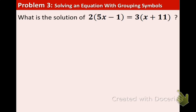Here is example 3. We have 2 times the quantity 5x minus 1 equals 3 times the quantity x plus 11. As you can see, we are going to need to use the distributive property. So share the 2 and then we are also sharing the 3 on the other side.